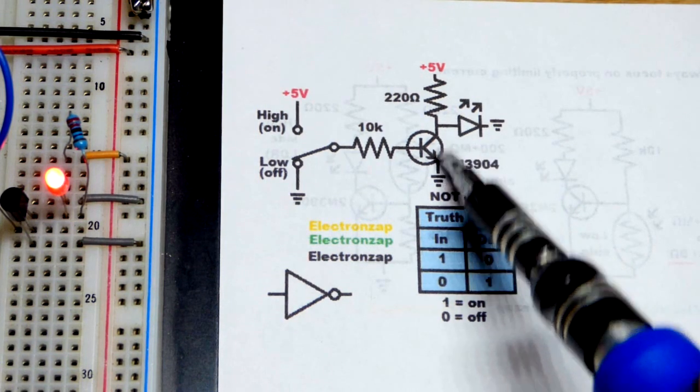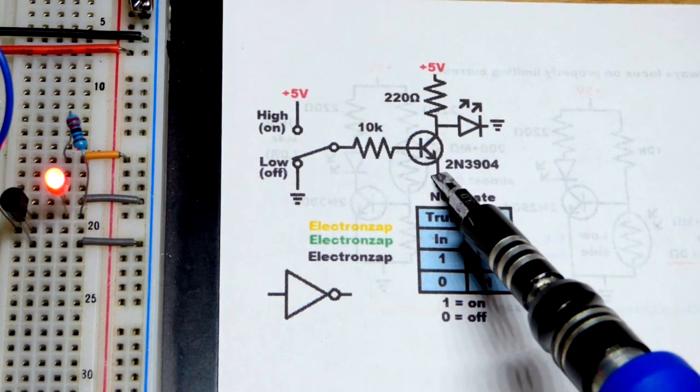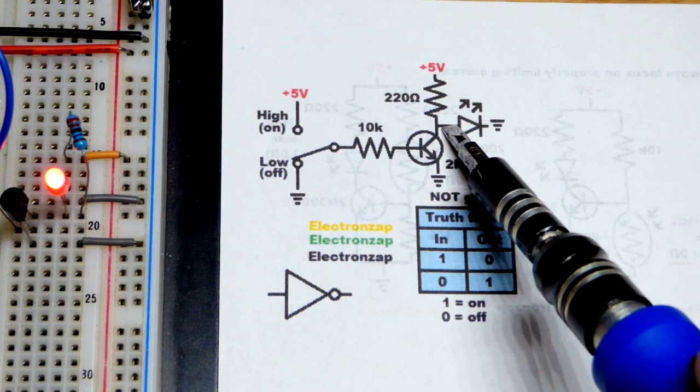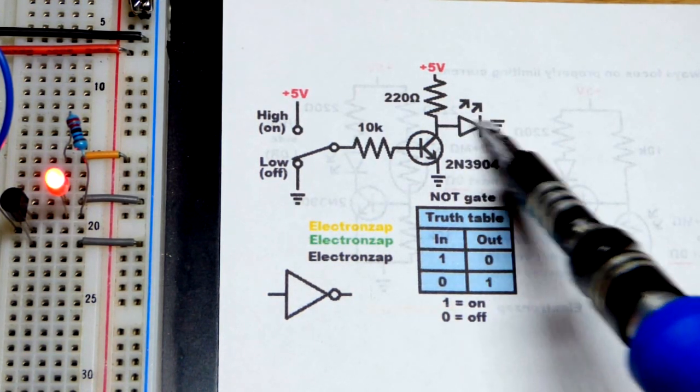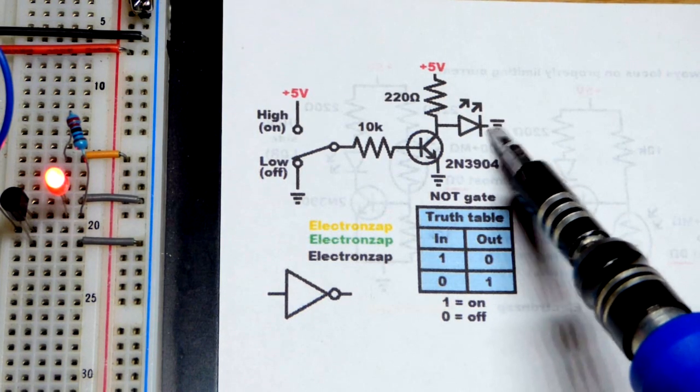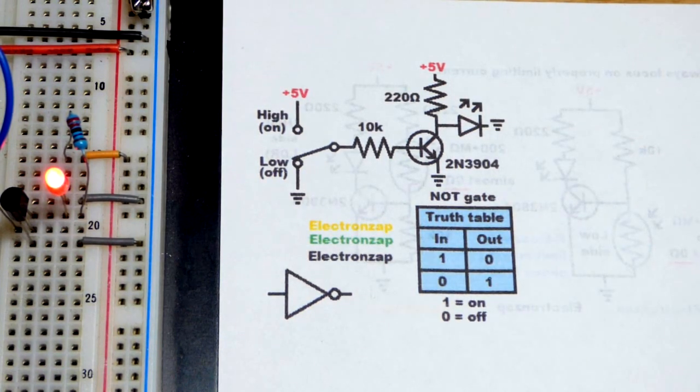With the transistor conducting, the anode of the LED sees ground, as does the cathode. There's no voltage difference—zero volts on both sides—so the LED will not light up.